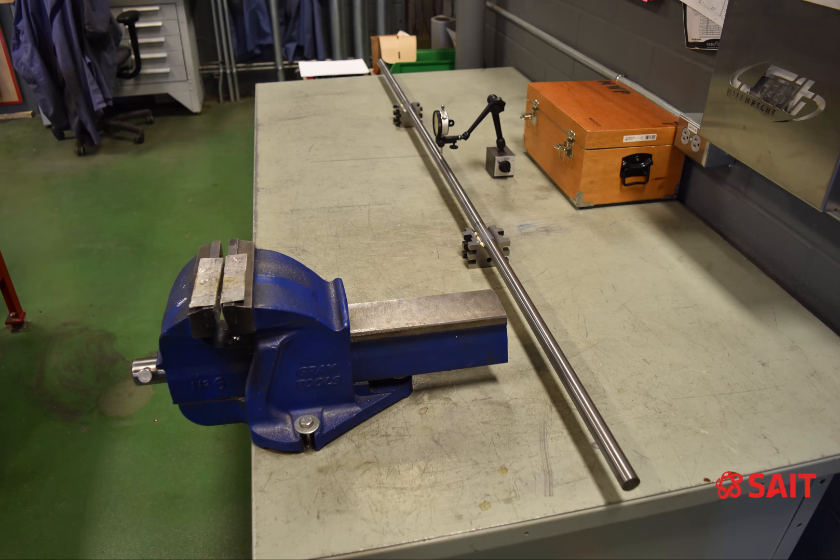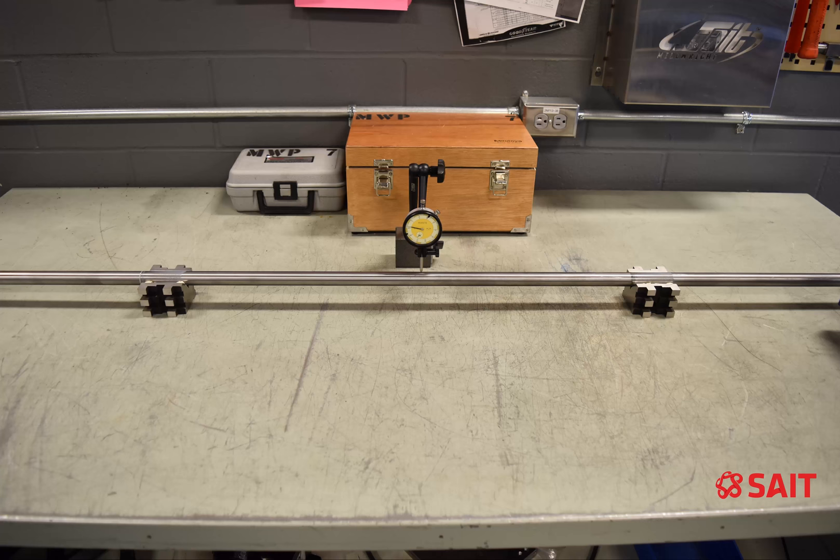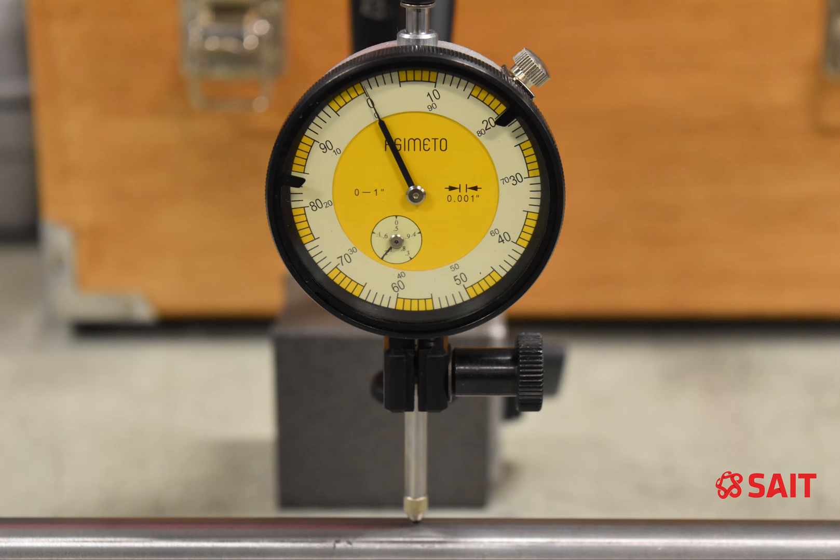I've set my dial indicator up in the middle of my shaft and the shaft is resting on two V-blocks set approximately at one-third intervals the total length of the shaft.